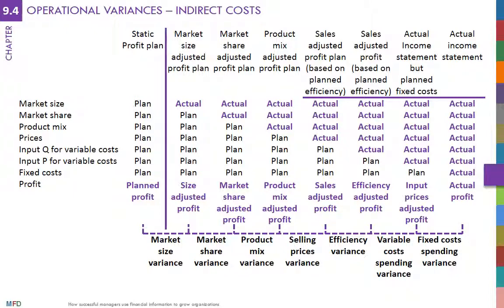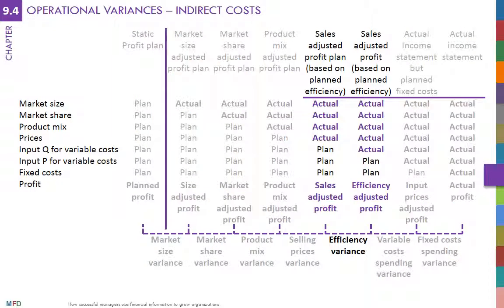The last piece of performance analysis deals with indirect costs. Variable indirect costs have two variances — efficiency and spending — while fixed costs have only one: spending.